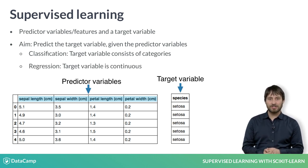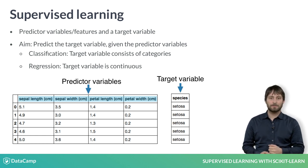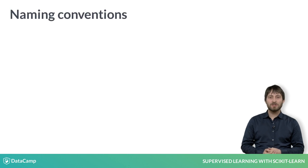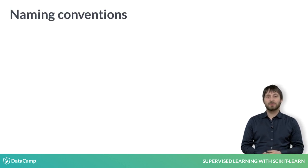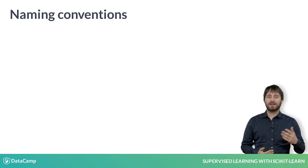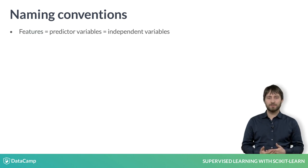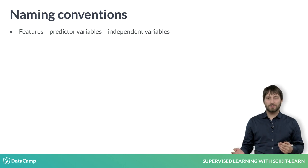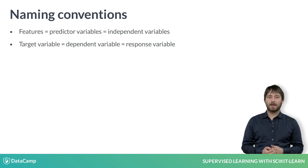In this chapter we will focus on classification, and the following chapter on regression. A note on naming conventions: out in the wild, you will find that what we call a feature, others might call a predictive variable or independent variable. And what we call a target variable, others may call the dependent variable or response variable.